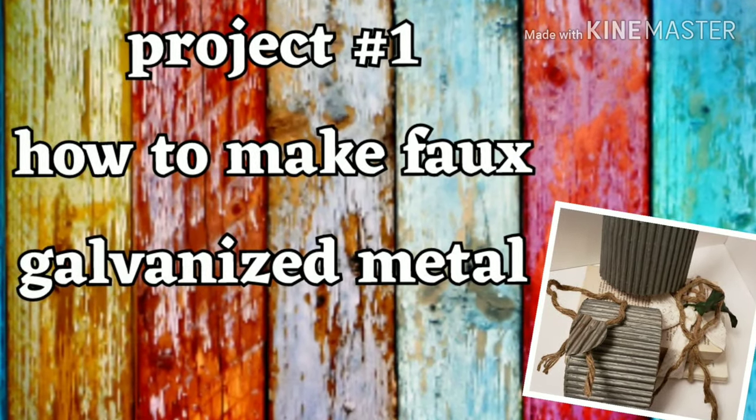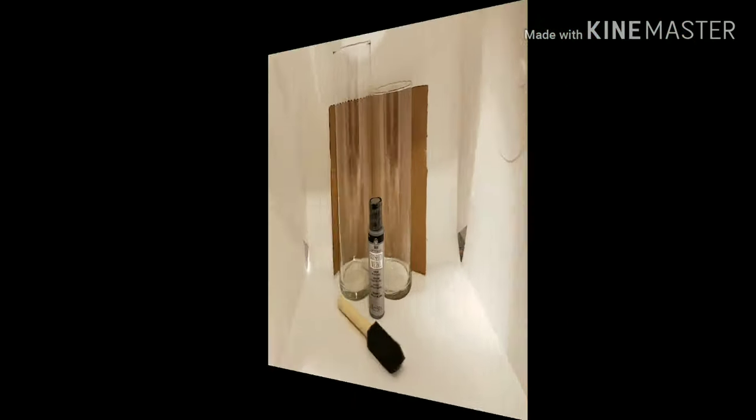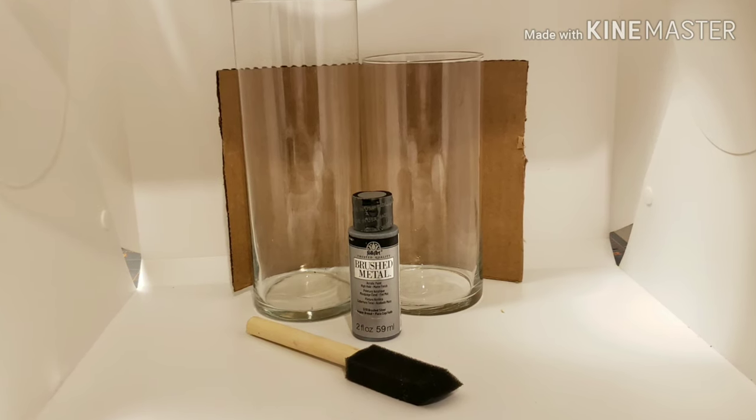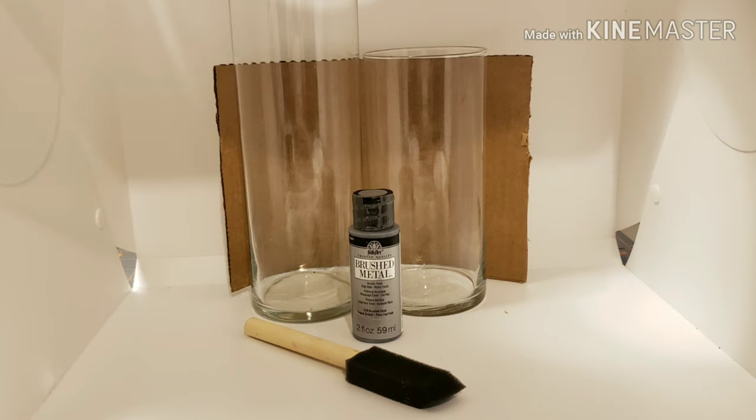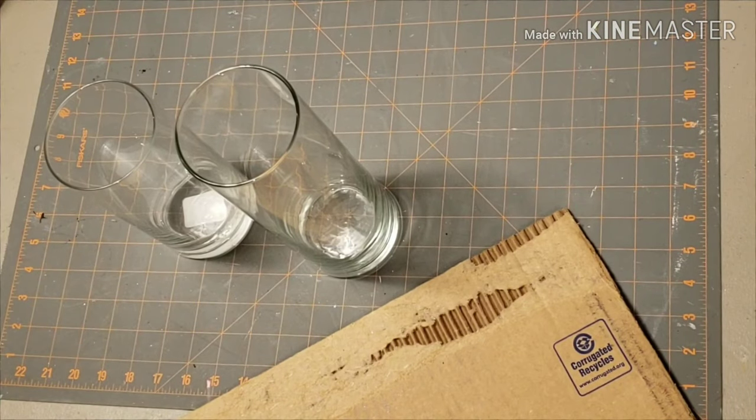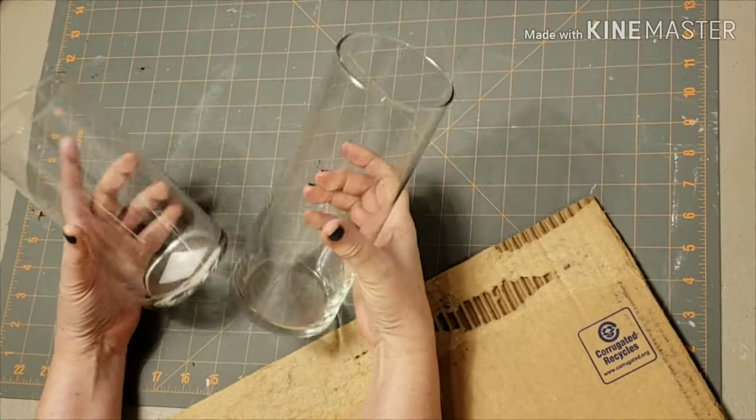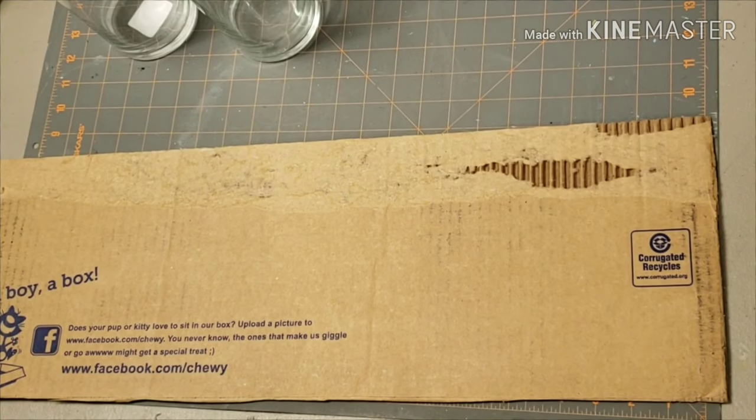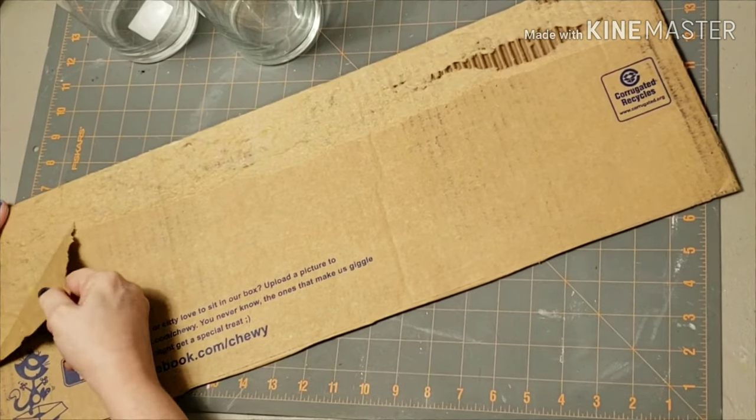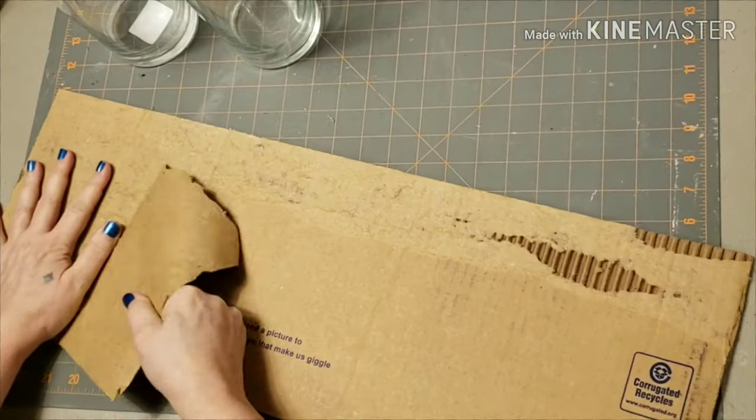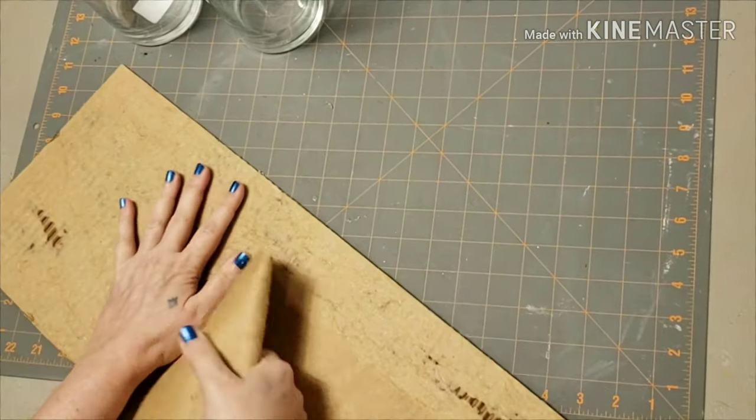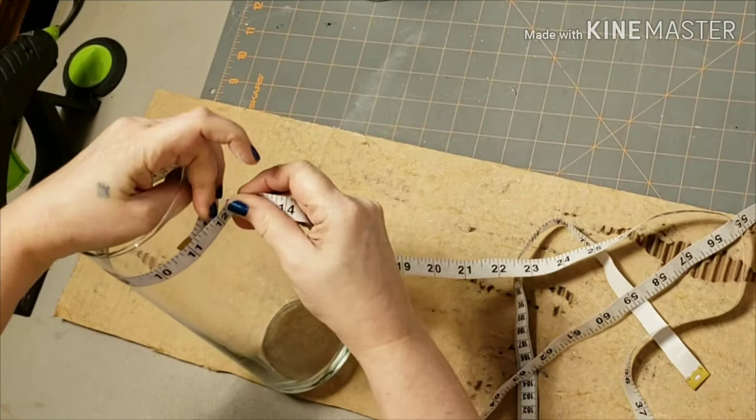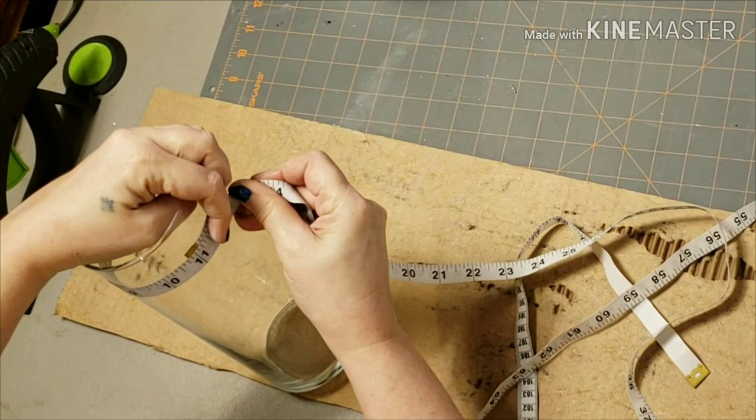So on with the first project, which is how to make faux galvanized metal. All you really need for this is cardboard, a brush, and some Folk Art brushed metal paint. I'm going to be using my pieces of faux galvanized metal in these cylinder vases from Dollar Tree, and I have two different heights. All you need to do is just peel the backing off the cardboard like so. To get my measurement I just measured around the vase, and it's about 11 inches, so I'm going to back it up to 10 and a half for the measurement that I need.